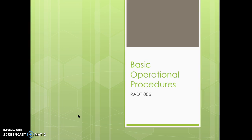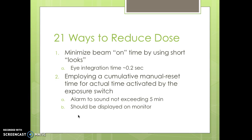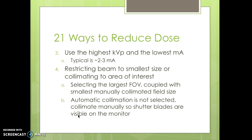Basic operation procedures — the goal is to reduce radiation. Operators of fluoroscopic equipment must reduce unnecessary radiation dose to the patient, themselves, and others. There are 21 ways to reduce dose. First, minimize beam-on time by using short looks — the eye integration time is about 0.2 seconds so you can do quick looks. Employ a cumulative manual reset timer not exceeding 5 minutes, displayed on the monitor. Use the highest kVp and lowest mA — typical is 2 to 3 mA — and restrict the beam by collimating to the area of interest.